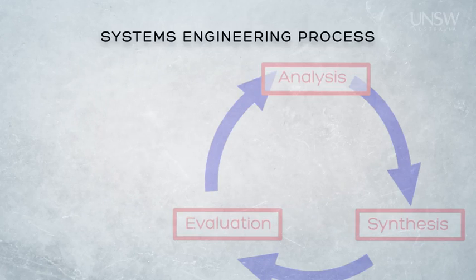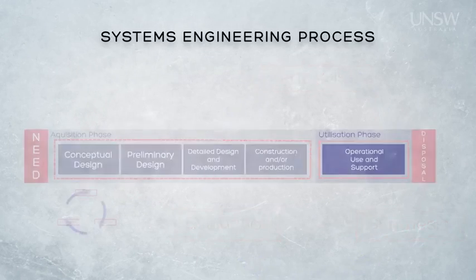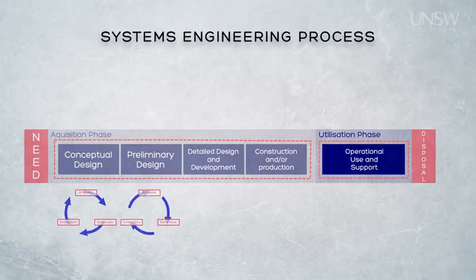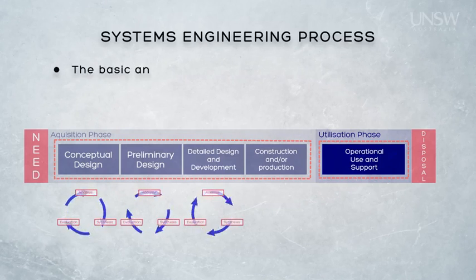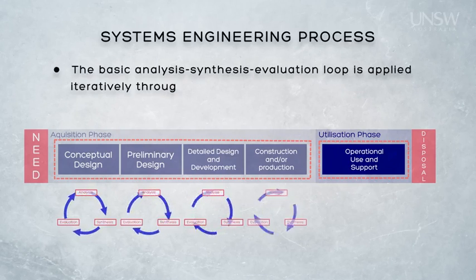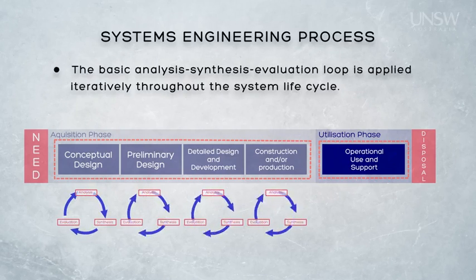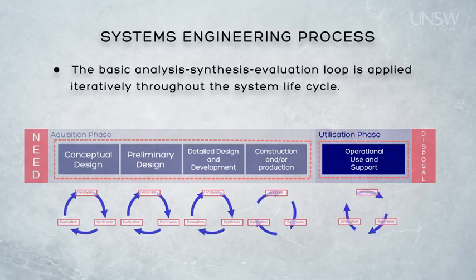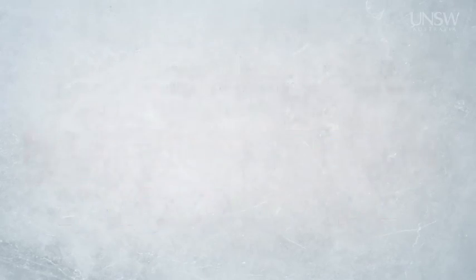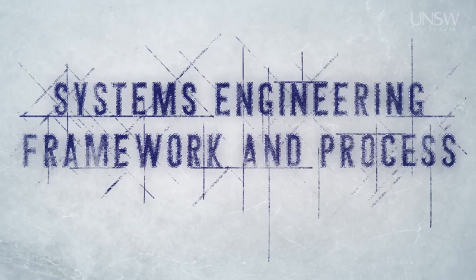The analysis-synthesis-evaluation loop can be applied across all the activities in the life cycle. This figure summarises that by showing visually how it can be applied iteratively to each of those activities. That finishes the introductory presentations for Module 2. In the next module, we begin our more detailed discussion of system engineering processes by examining the role of requirements engineering and the major artefacts that are produced as the system is developed.